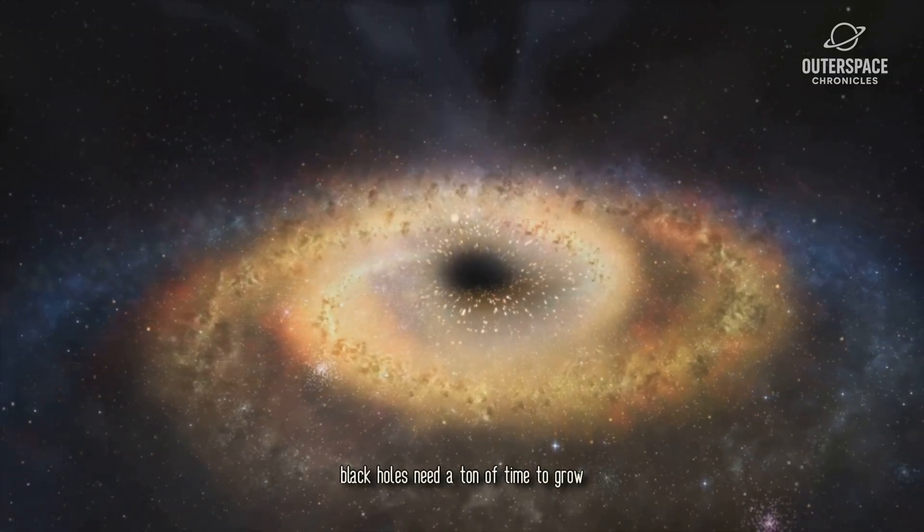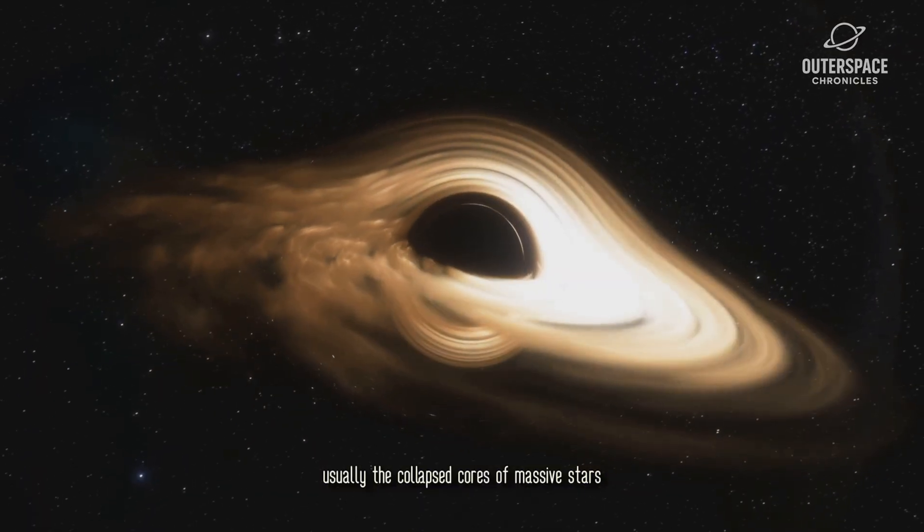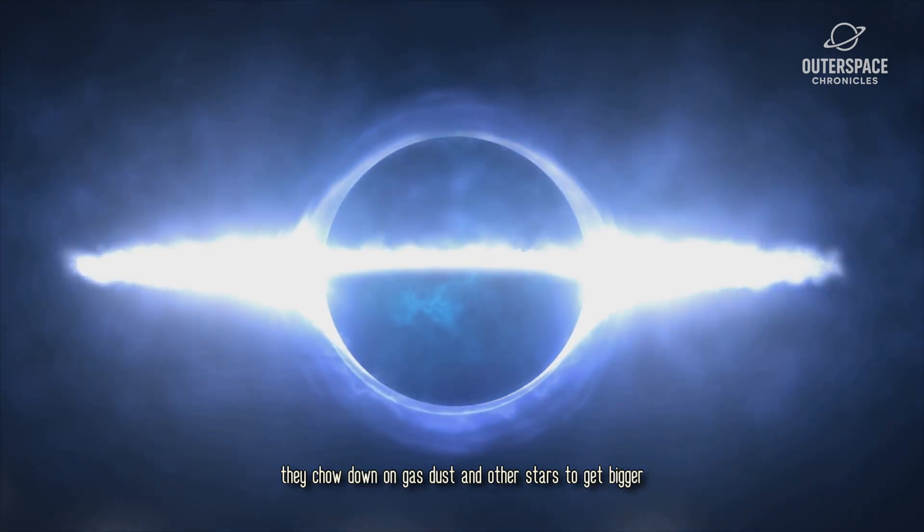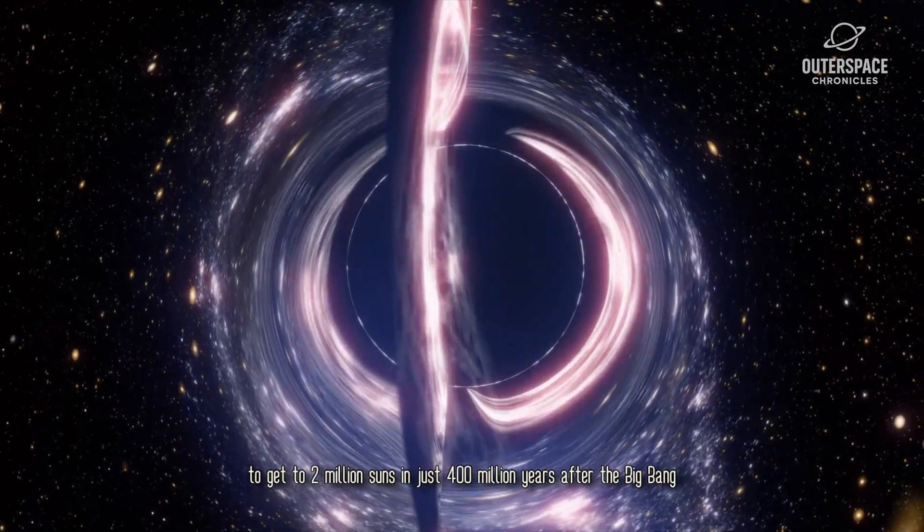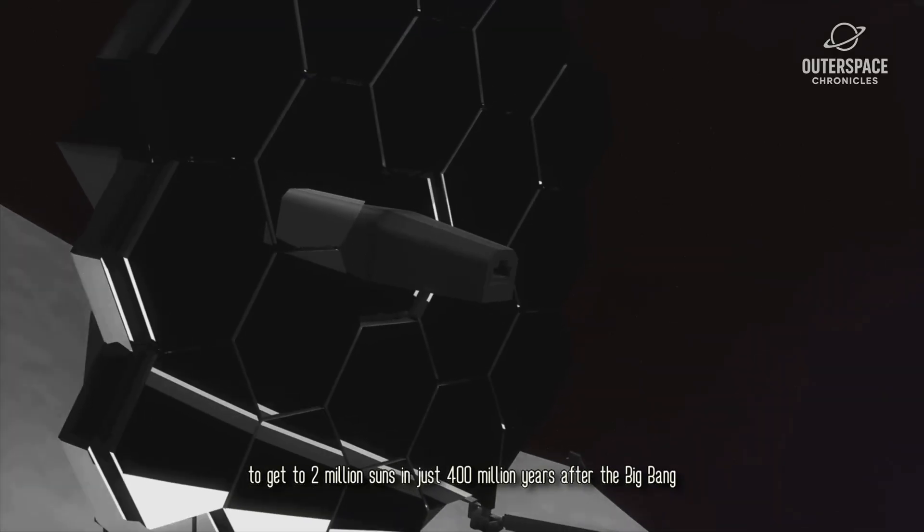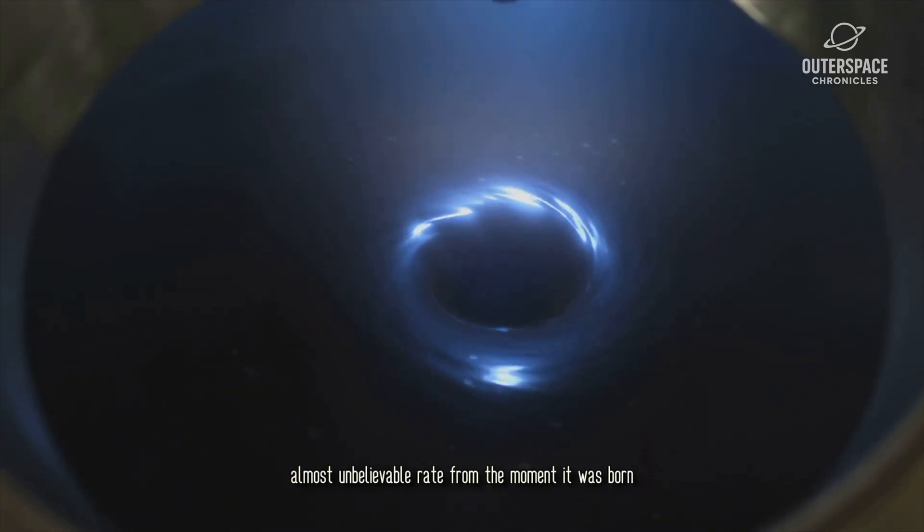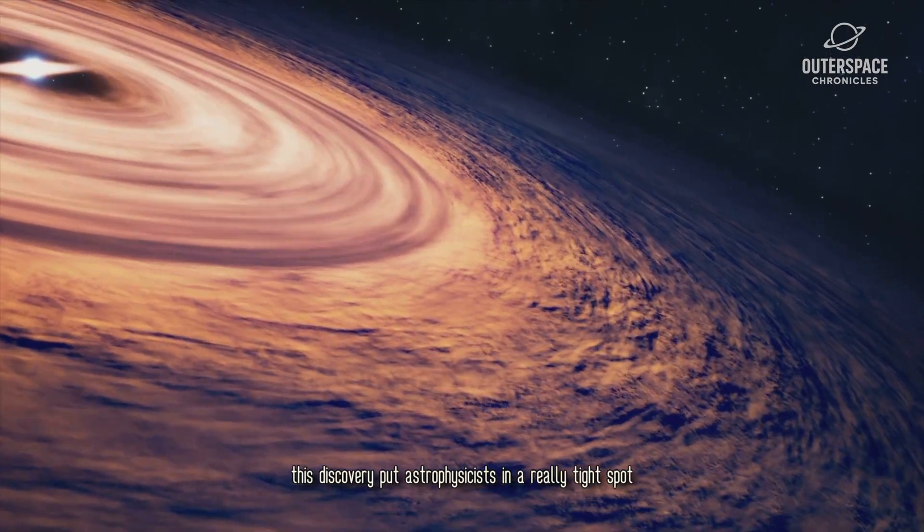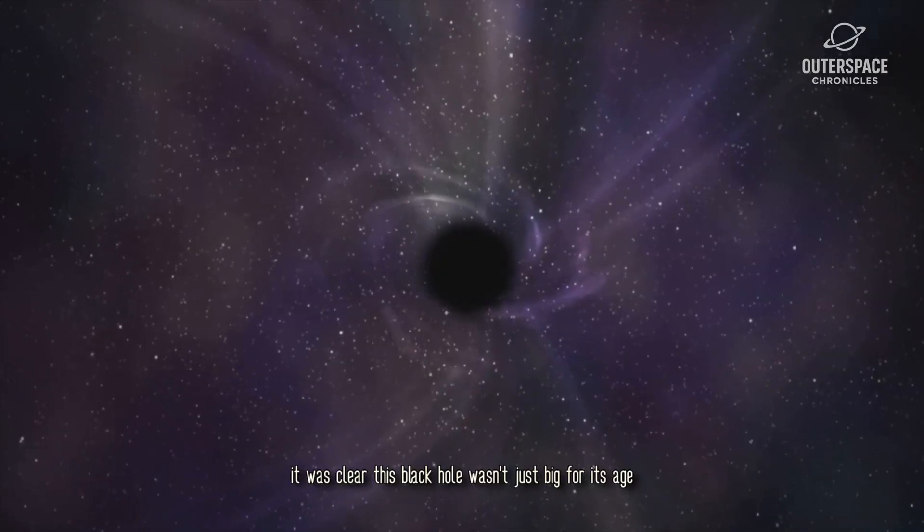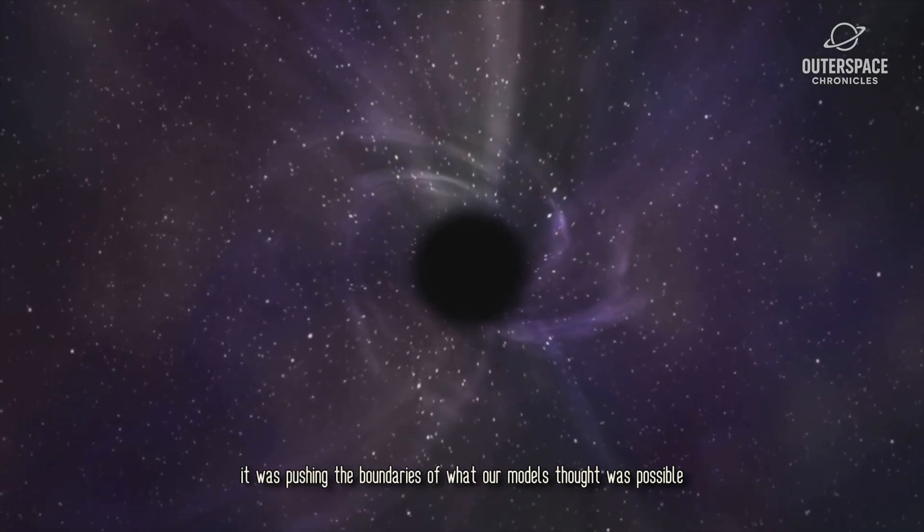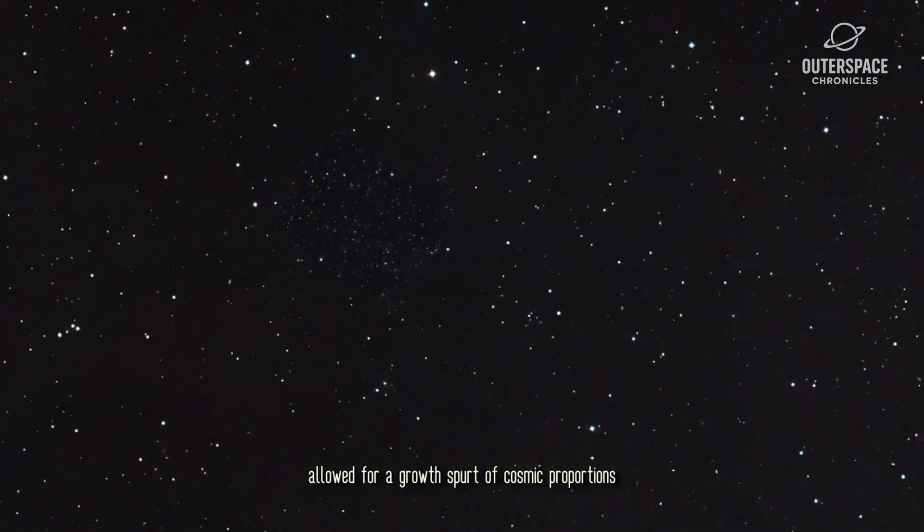According to everything we know, black holes need a ton of time to grow. They start from what we call seeds, usually the collapsed cores of massive stars. Then over billions of years, they chow down on gas, dust, and other stars to get bigger. It's supposed to be a slow and steady process. To get to two million suns in just 400 million years after the Big Bang is incredibly hard to explain. It would need to be eating at a shocking, almost unbelievable rate from the moment it was born. This discovery put astrophysicists in a really tight spot. How do you form a giant so quickly? It was clear this black hole wasn't just big for its age. It was pushing the boundaries of what our models thought was possible, suggesting that something in the early universe allowed for a growth spurt of cosmic proportions.